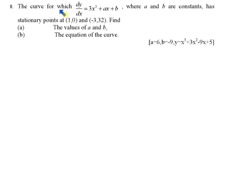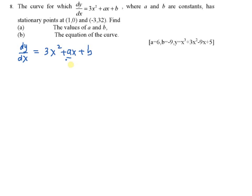Example 8: the curve for which dy/dx is equal to 3x squared plus ax plus b. Look at here, this dy/dx has two unknowns — dy/dx equals 3x squared plus ax plus b. You have the unknowns a and b here.